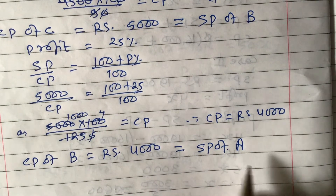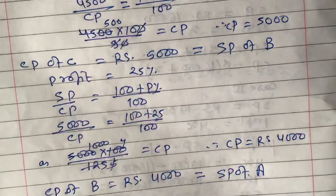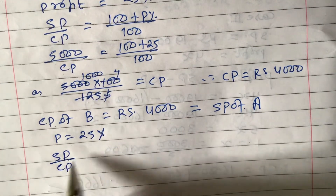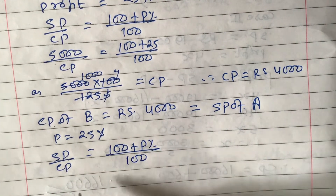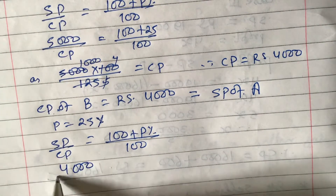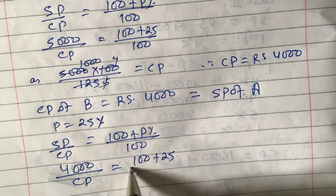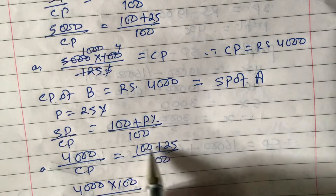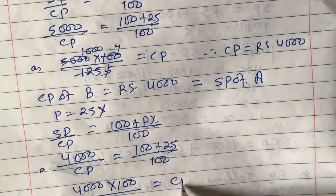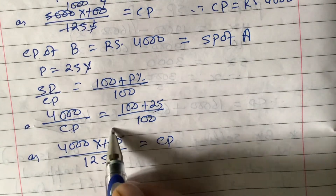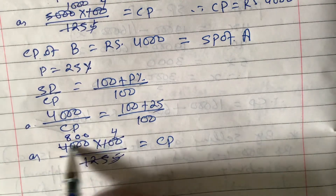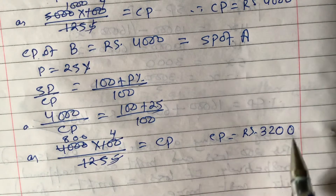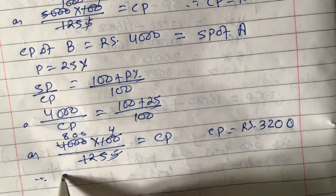A also made a 25% profit, so SP of A = ₹4,000. Applying the formula again: 4000 / CP of A = (100 + 25) / 100 = 125 / 100. Cross-multiplying: CP of A = (4000 × 100) / 125 = 400000 / 125 = ₹3,200.